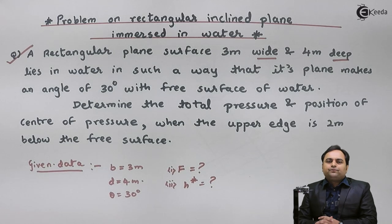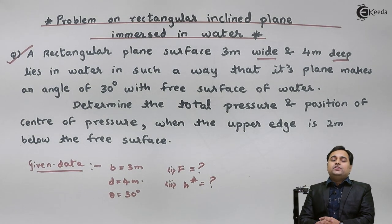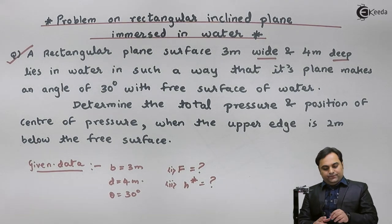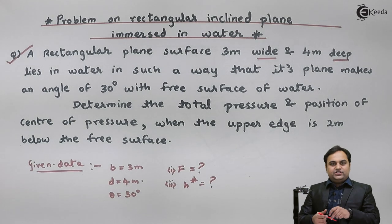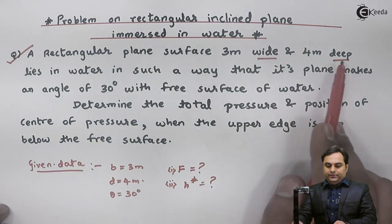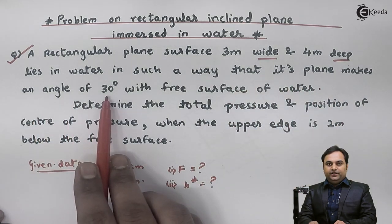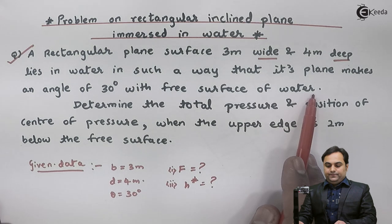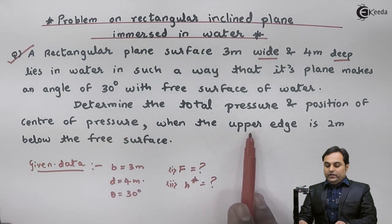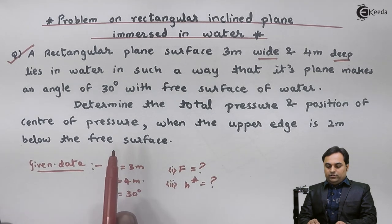Hello friends. In this video we will see a rectangular inclined surface which is immersed in water and what are the effects of water on that inclined surface. The question is: a rectangular plane surface 3 meter wide and 4 meter deep lies in water such that its plane makes an angle of 30 degrees with the free surface. Determine the total pressure and position of center of pressure when the upper edge is 2 meter below the free surface.